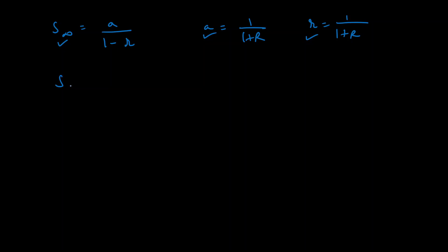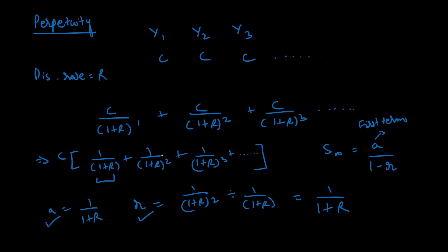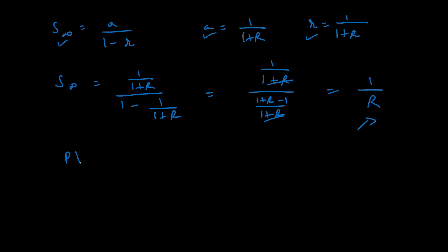Now we can find the sum of our series within brackets. Substituting the values: the sum is [1/(1+R)] divided by [1 - 1/(1+R)], which simplifies to [1/(1+R)] divided by [(1+R-1)/(1+R)]. The (1+R) terms cancel out and we are just left with 1/R. Since the present value equals C times whatever was in brackets, the present value of a perpetuity comes out to be C/R.